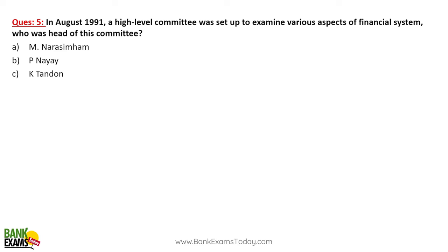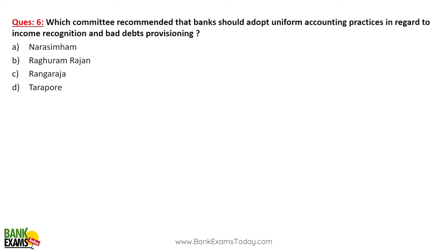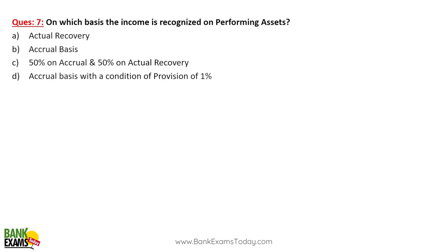The Narasimham Committee recommended that banks should adopt uniform accounting practices in respect of identifying income and bad debt provisions. On which basis is income recognized on performing assets? This brings us to the difference between actual and accrual basis.